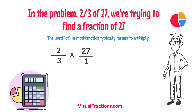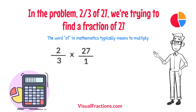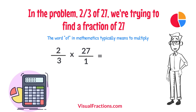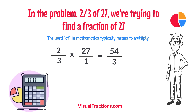This transformation makes it easier to work with our numbers as fractions. Now we proceed to multiply across. First, multiply the numerators: 2 times 27 equals 54. Next, multiply the denominators: 1 times 3 equals 3. We now have a new fraction, 54-thirds.